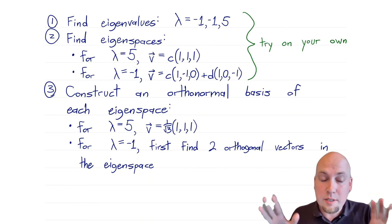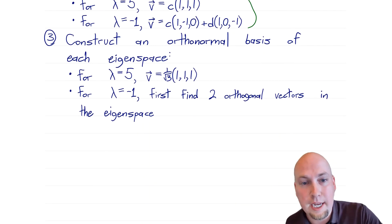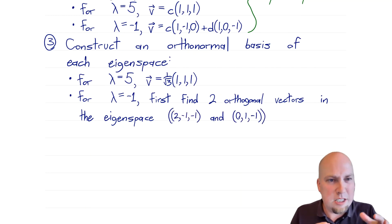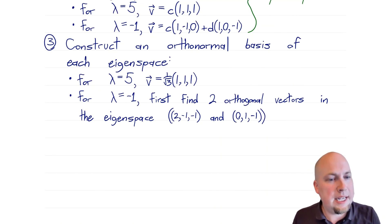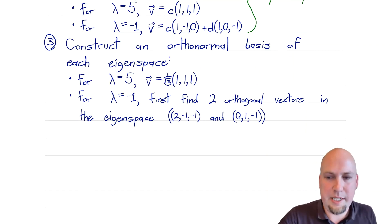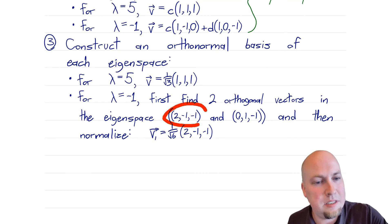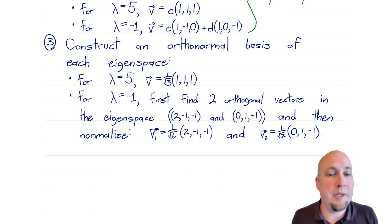Our procedure is to first find two orthogonal vectors in that eigenspace, then divide by their lengths. In this case, we can eyeball it: adding the two basis vectors [1,-1,0] and [1,0,-1] gives [2,-1,-1], and subtracting them gives [0,1,-1]. Their dot product is 0·2 + 1·(−1) + (−1)·(−1) = 0, so they're orthogonal. Then normalize: divide [2,-1,-1] by its length to get (1/√6)[2,-1,-1], and [0,1,-1] by its length to get (1/√2)[0,1,-1].